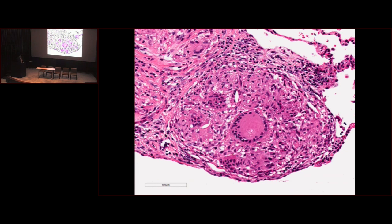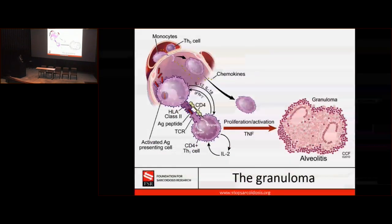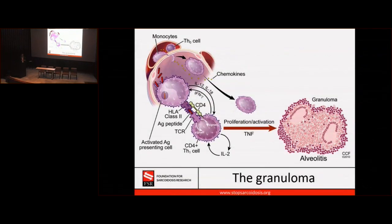Lymphocytes are also important in sarcoidosis. But more important than knowing what the granuloma is, I think, is how does this happen — how is this granuloma formed? We think the best theory out there is that everything starts with an exposure to some antigen. We don't know specifically what this antigen is, but that's what we think happens.